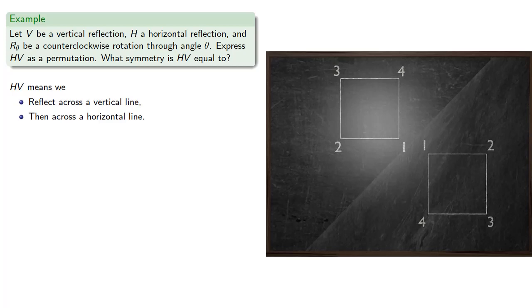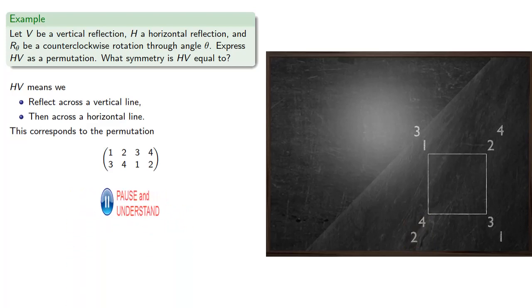Now since we've labeled the vertices, we see where each vertex gets mapped to. And so that means that this transformation corresponds to the permutation: 1 goes to 3, 2 becomes 4, 3 becomes 1, and 4 becomes 2. And if we think about this as a symmetry, this is the same as a rotation by 180 degrees. And so HV is R-180.